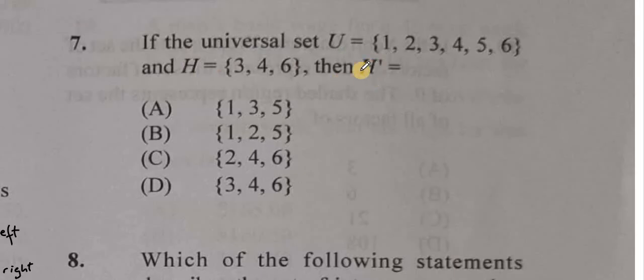the complement and the set actually combine together to give us the universal set. So if set H has 3, 4, and 6, then H complement will be the others, 1, 2, and 5. So our answer is B.